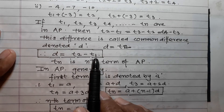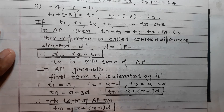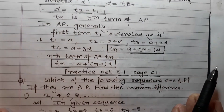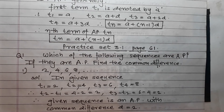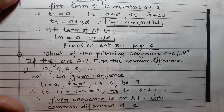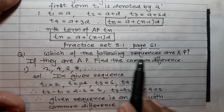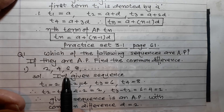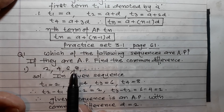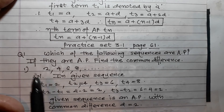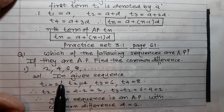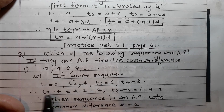Now I will take some examples from Practice Set 3.1, page number 61, so that the concept will be clear. The question is: which of the following sequences are AP?